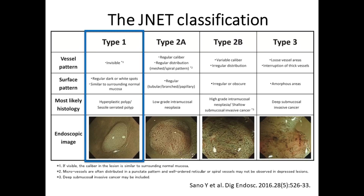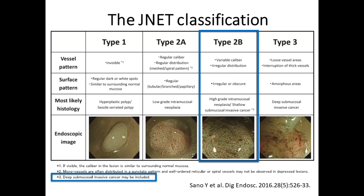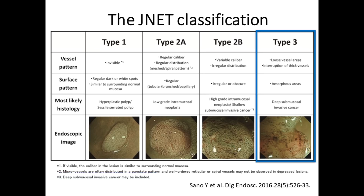J-Net Type 1 corresponds to the histology of hyperplastic or sessile serrated polyps. J-Net Type 2A refers to low-grade intramucosal neoplasia, mostly adenomas. J-Net Type 2B basically corresponds to high-grade intramucosal neoplasia or shallow submucosal invasive cancer, and we should note that this category sometimes includes deep submucosal invasive cancer. J-Net Type 3 represents deep submucosal invasive cancer, which requires surgical resection.